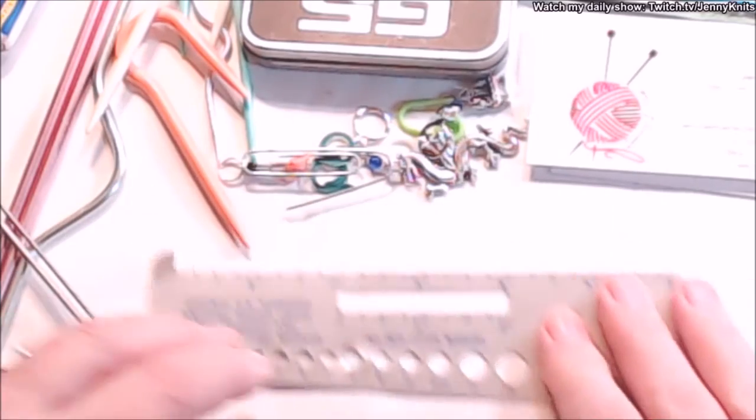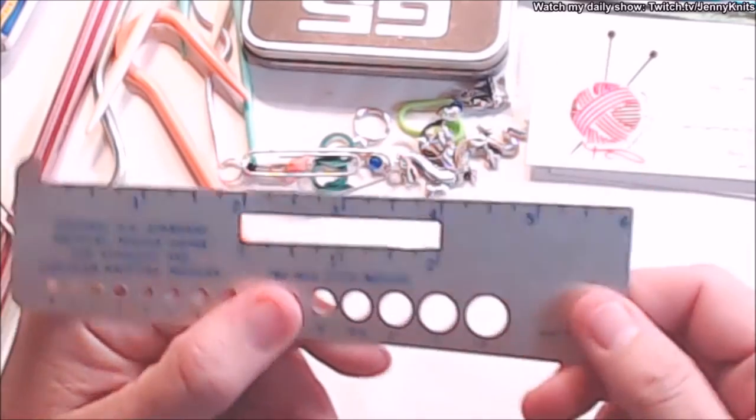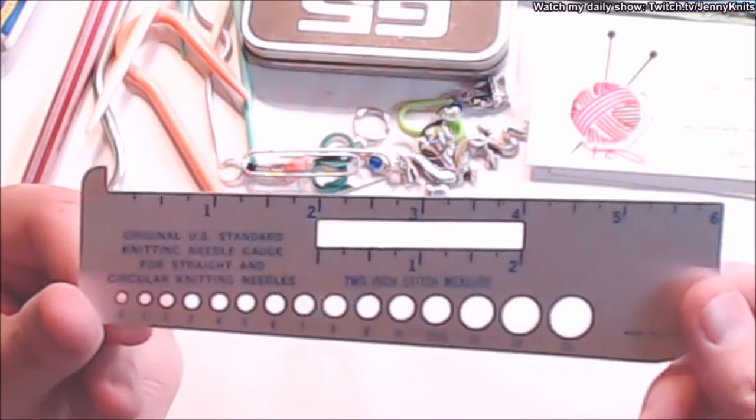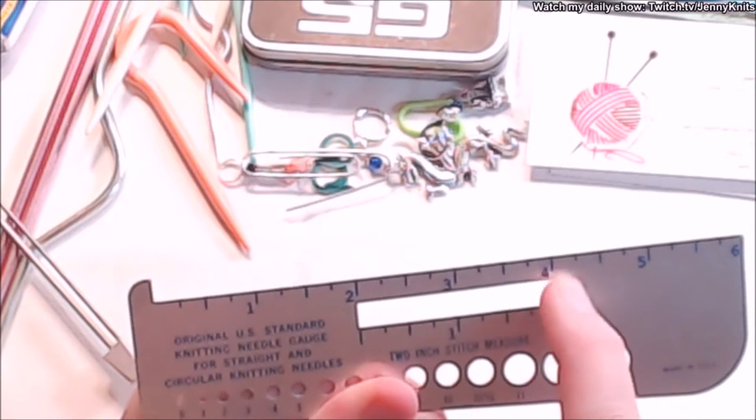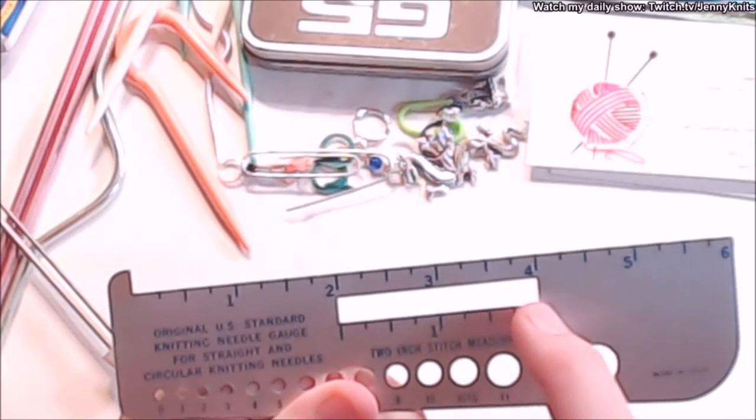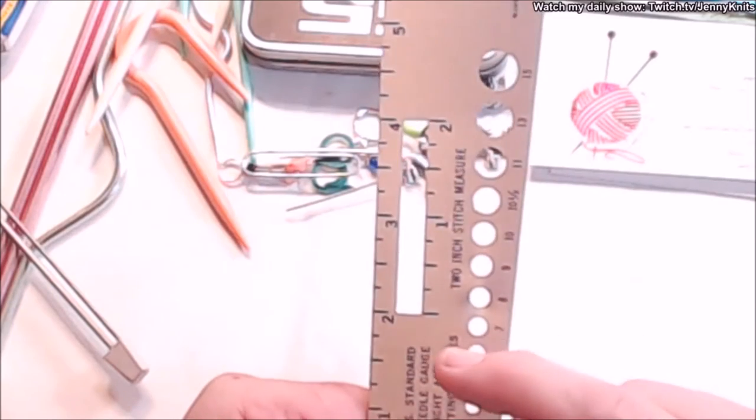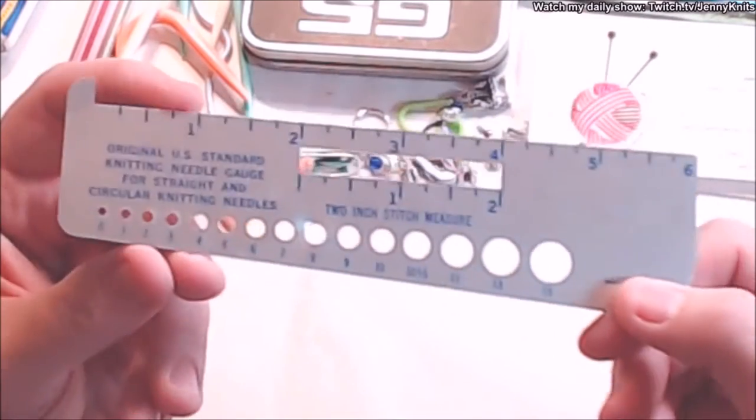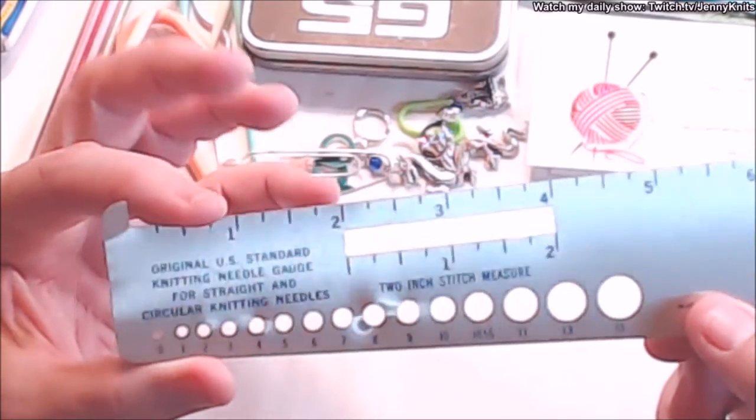You can also use this as a tape measure - it does have a ruler on it so you can measure how far you've worked. This is also a stitch guide. I can hold this little window over my knitting and count how many stitches per inch when I'm checking my gauge. I can also move it this way and check how many rows per inch so I can check my gauge.